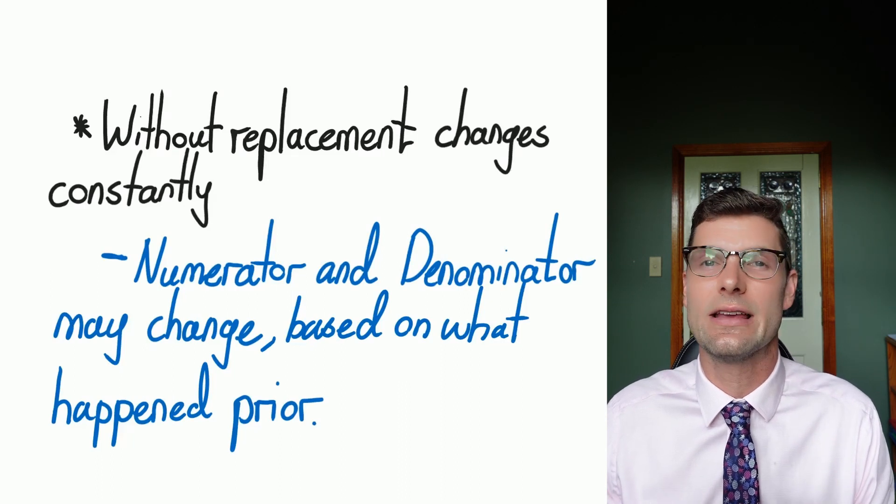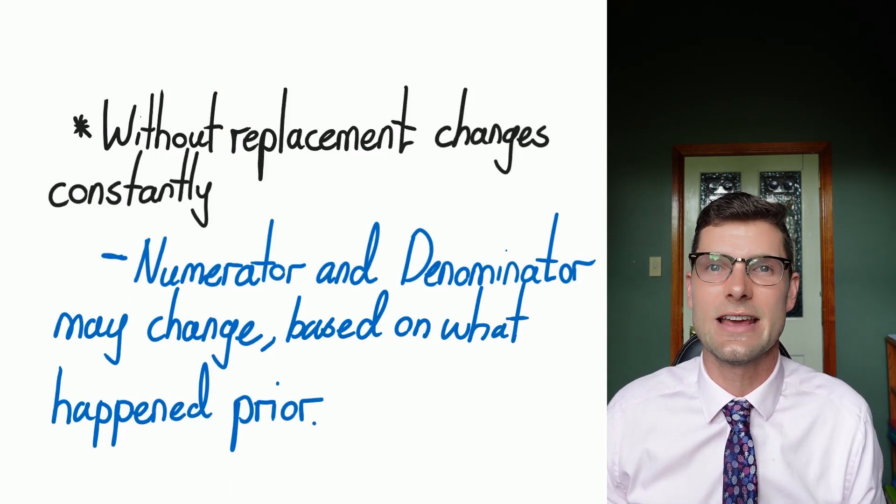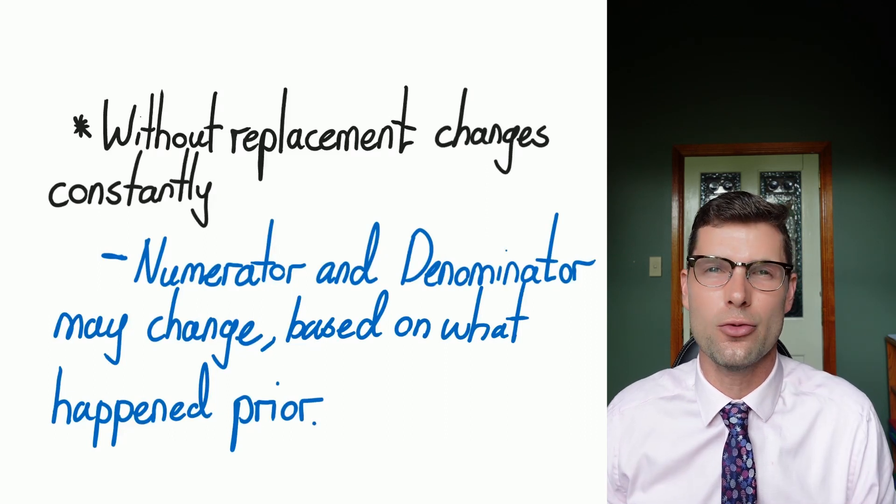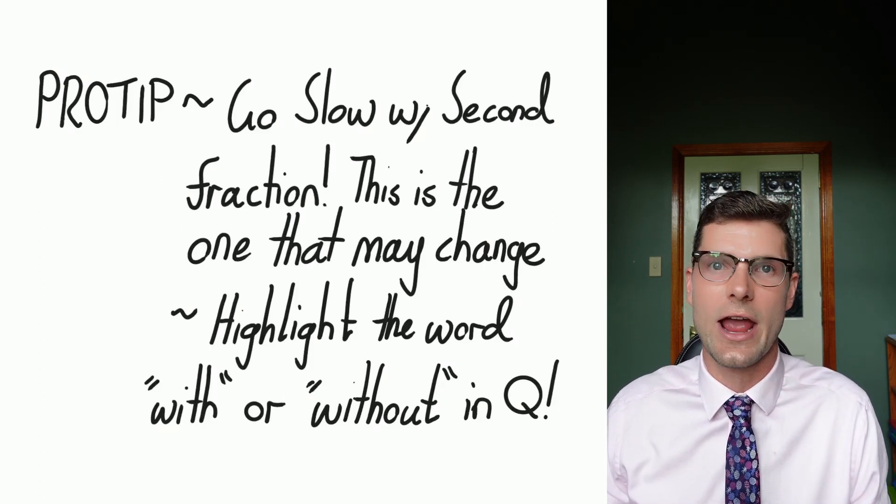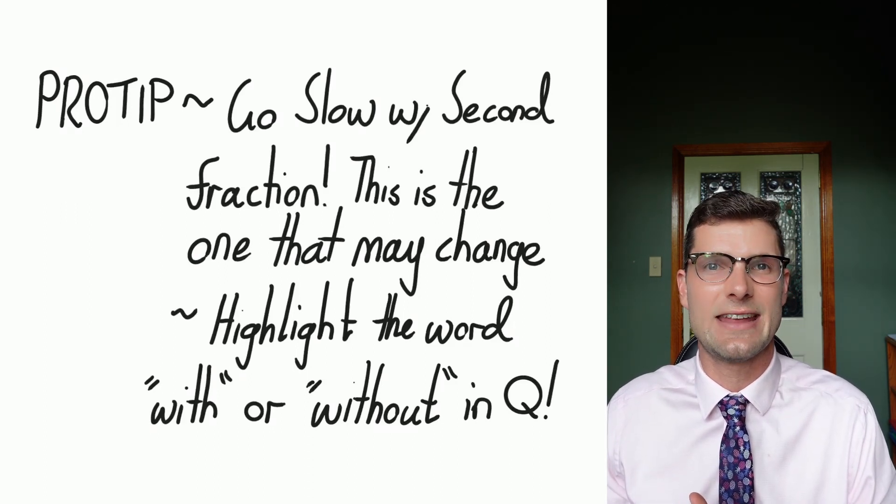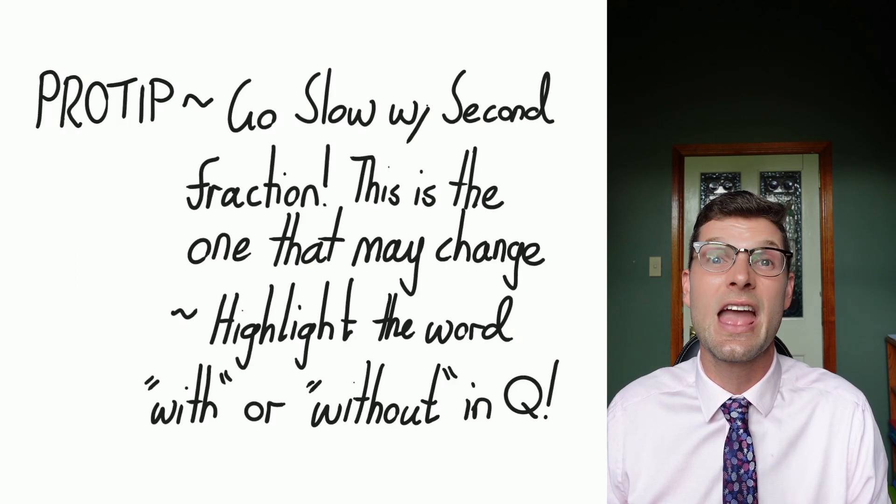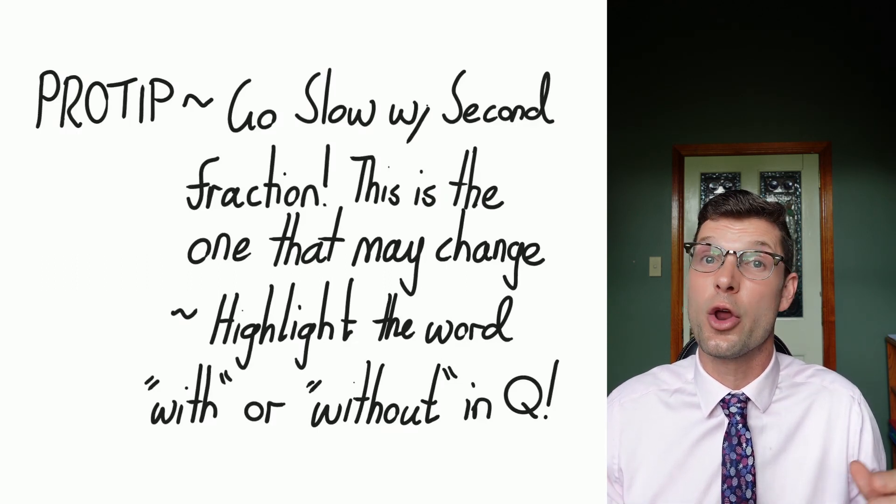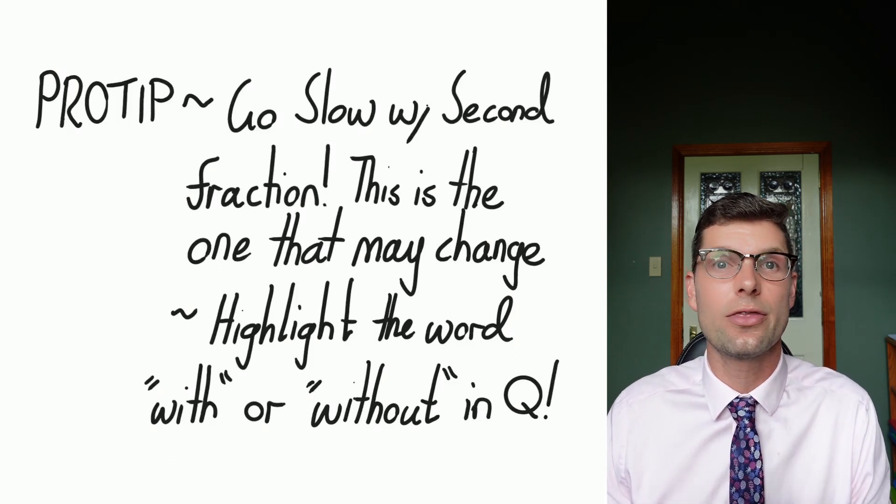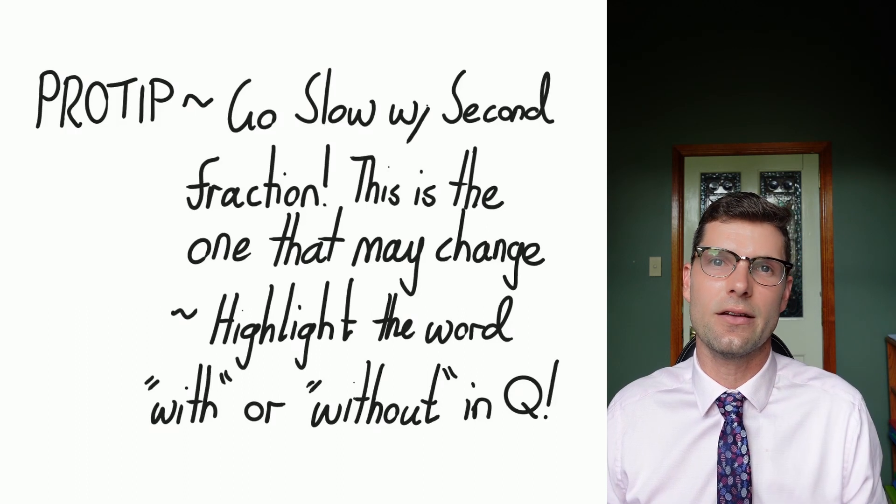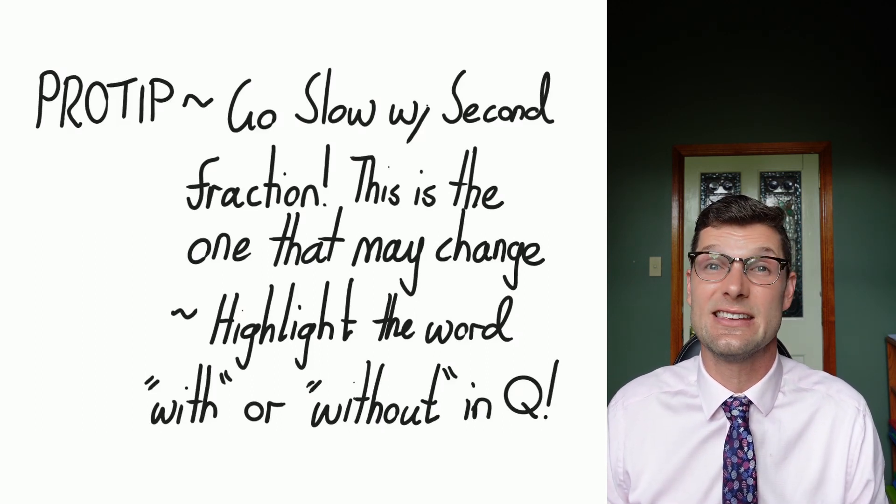So just reading the question is really hyper important for these questions because maths isn't that hard. You just have to know what's happened in the first go so you can correctly identify what is going to happen in that second go round. So my big pro tips for these are: please go slow, especially with the second fraction. This is the one that could change up. The second thing I would highly recommend is please just highlight the word with or without during the question. If it doesn't have those specific words in the question, just write a little note to yourself saying with or without replacement. Just getting on top of this kind of setting out for these questions will get you the whole way there.